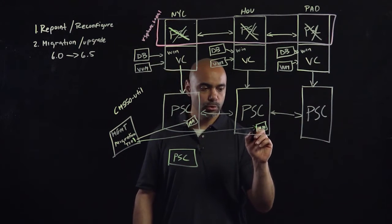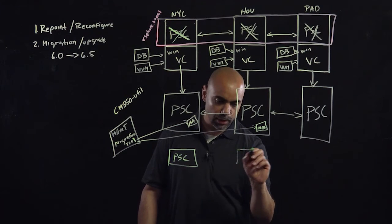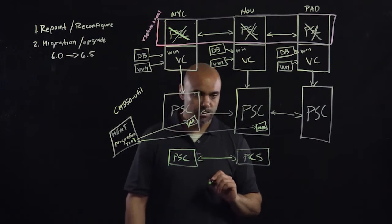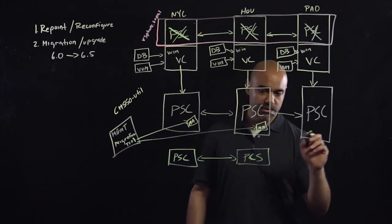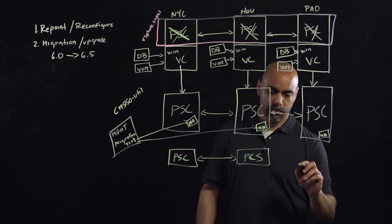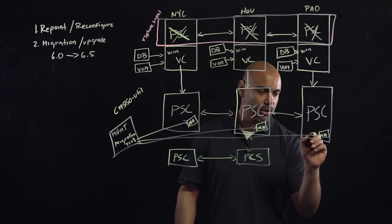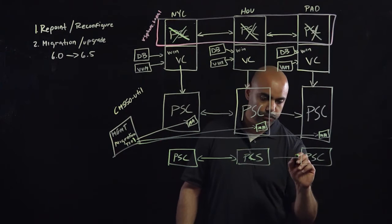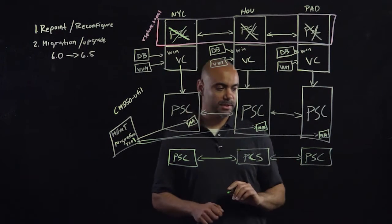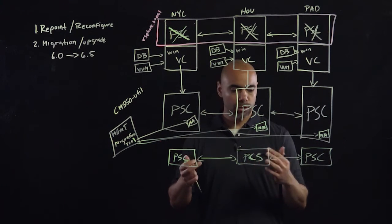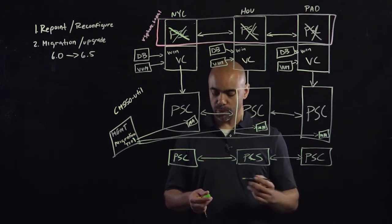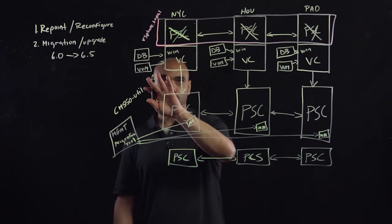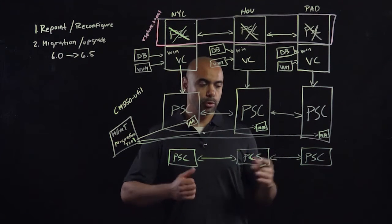We're going to run the migration assistant, then go back and have the tool communicate out there — it's going to deploy a new appliance-based PSC. PSCs talk to each other bi-directionally, and we're going to do the same thing for all our PSCs. The migration tool will deploy and automatically create a new PSC. Now all our PSCs are migrated from Windows-based to appliance-based 6.5 platform services controllers.